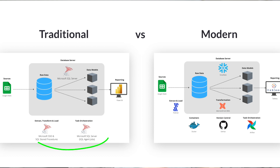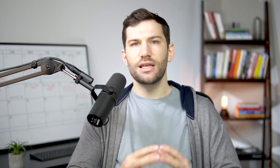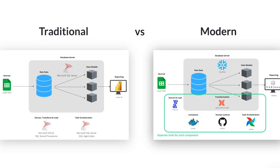For example, in a traditional stack you'll probably be working with a lot of drag-and-drop interfaces, especially for data transformation. This tool could also include the extract and load — all coupled together in one tool. Whereas in a modern stack, you're likely going to see individual separate tools for each component. While this definitely adds more complexity to the overall architecture, each individual tool is, in theory, better at that individual task.